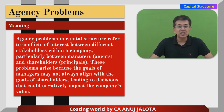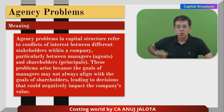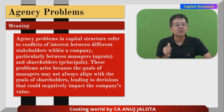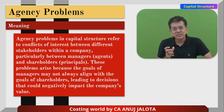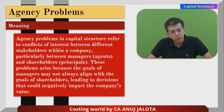Agency costs come because of agency problems. Agency problems in any capital structure refer to the conflict of interest between stakeholders — particularly between managers (the agents) and the shareholders (the principals), because managers act on behalf of shareholders. These problems arise because the goals of managers might not always align with the goals of shareholders, leading to decisions that could negatively impact company's value.